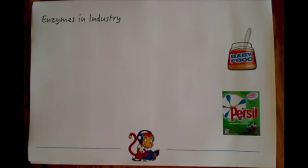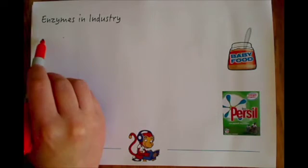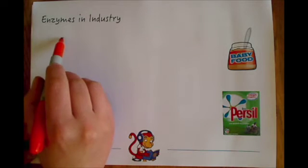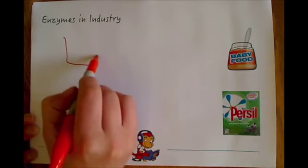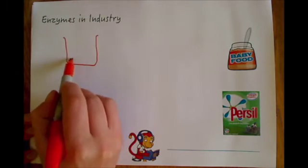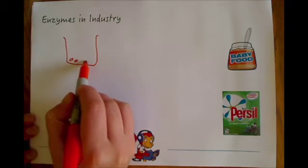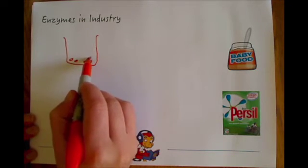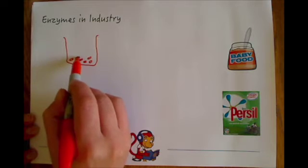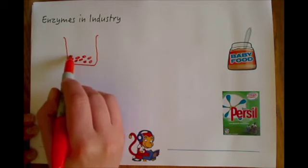First of all, to make the enzymes that we use for industry, we use microorganisms, for example bacteria. We'd have a large vat of bacteria that we grow and culture, and that bacteria would produce the enzyme that we want.